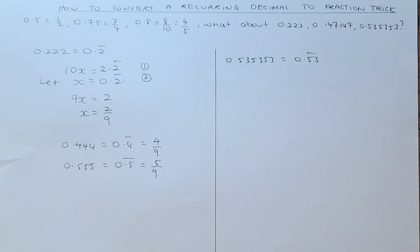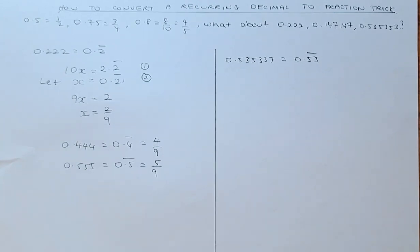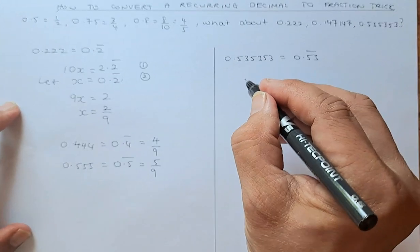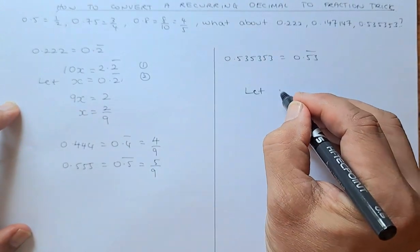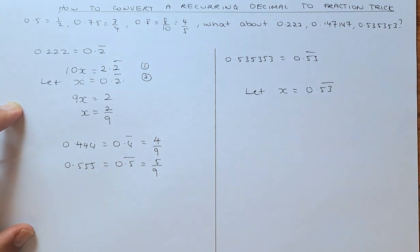So now we look at the second example, 0.535353. So we let x be equal to 0.53 recurring.